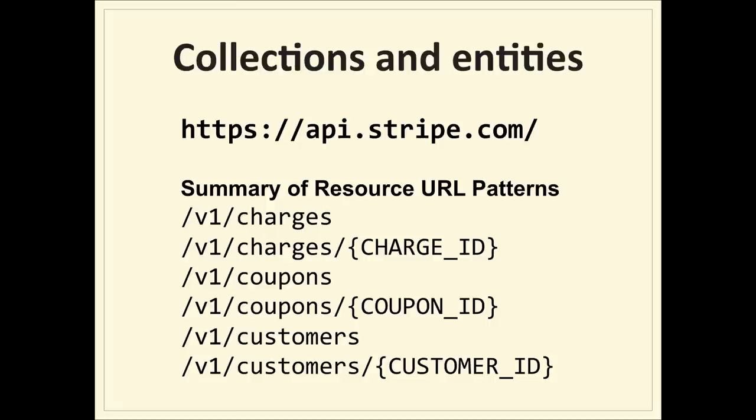Let's take that very basic building block — the resource and the verb — and start applying it. Stripe has a really good example. A great way to think about these things is that there are groups of things — collections — and there are individual things within them — entities in that collection. Looking at Stripe's API design, they have charges, coupons, and customers as collections. You can POST to any of those collections to create an entity — a charge ID, coupon ID, or customer ID. It's a really simple and obvious pattern. You know how to work with it — creating a coupon, you POST and get back an ID.